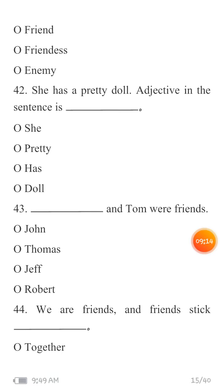MCQ 42: 'She has a pretty doll.' Adjective in the sentence is — us ke paas ek khoobsurat gudiya hai. Adjectives are words that give information about a noun. The noun here is 'doll' — identify which word is describing it. Your options are: she, pretty, has, and doll.